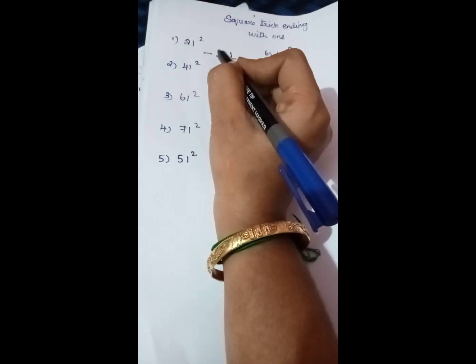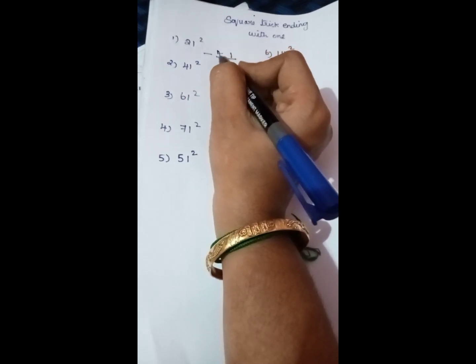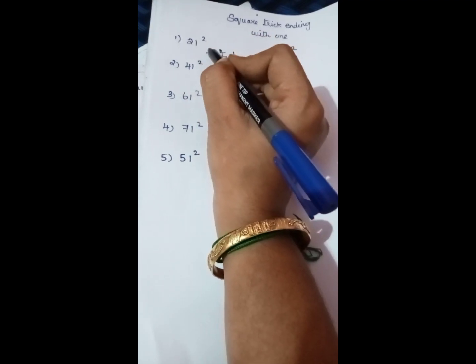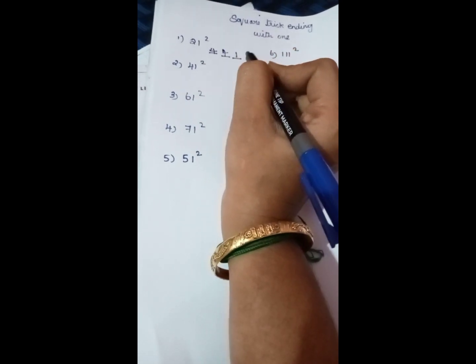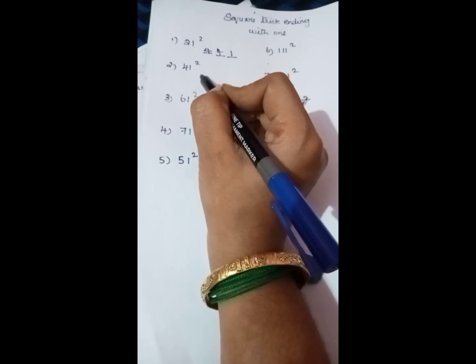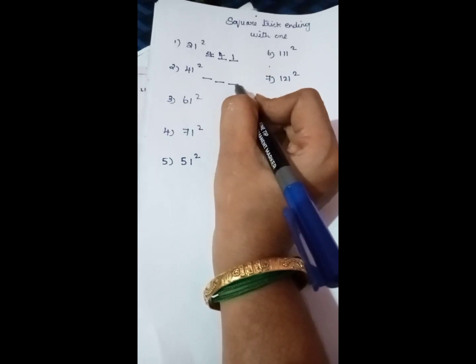And square the 2, which is 4, so 441. Next number is 41 square. Square the 1, which is 1, double the 4 to get 8.